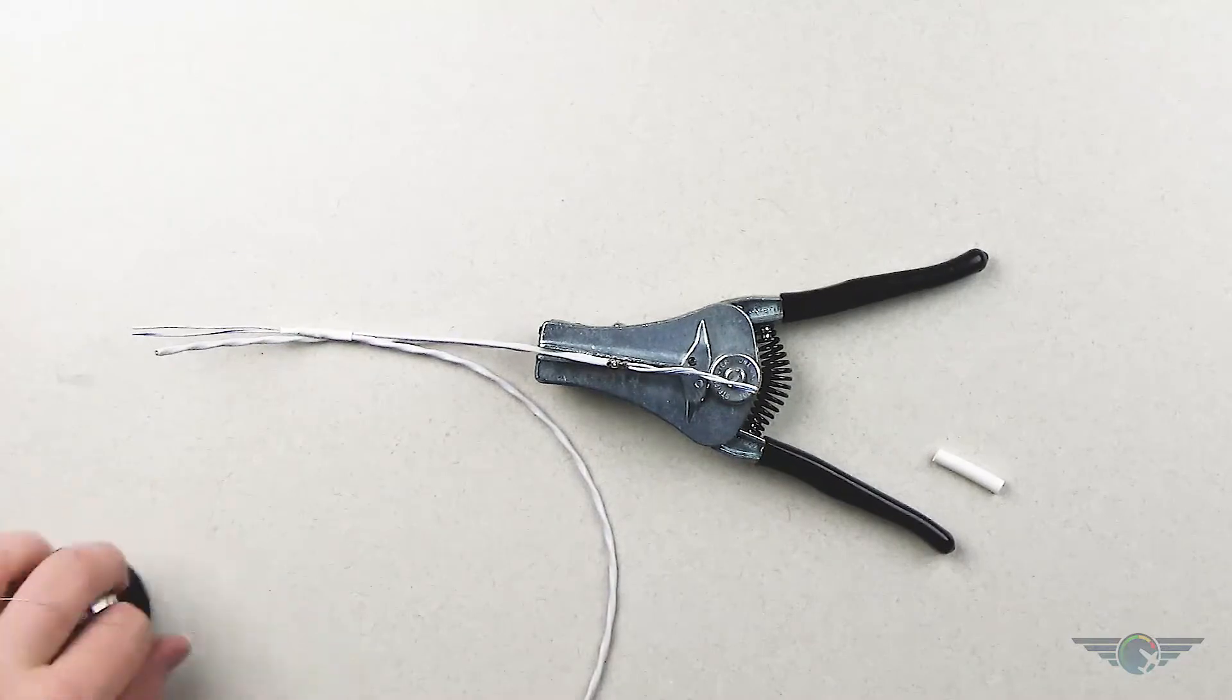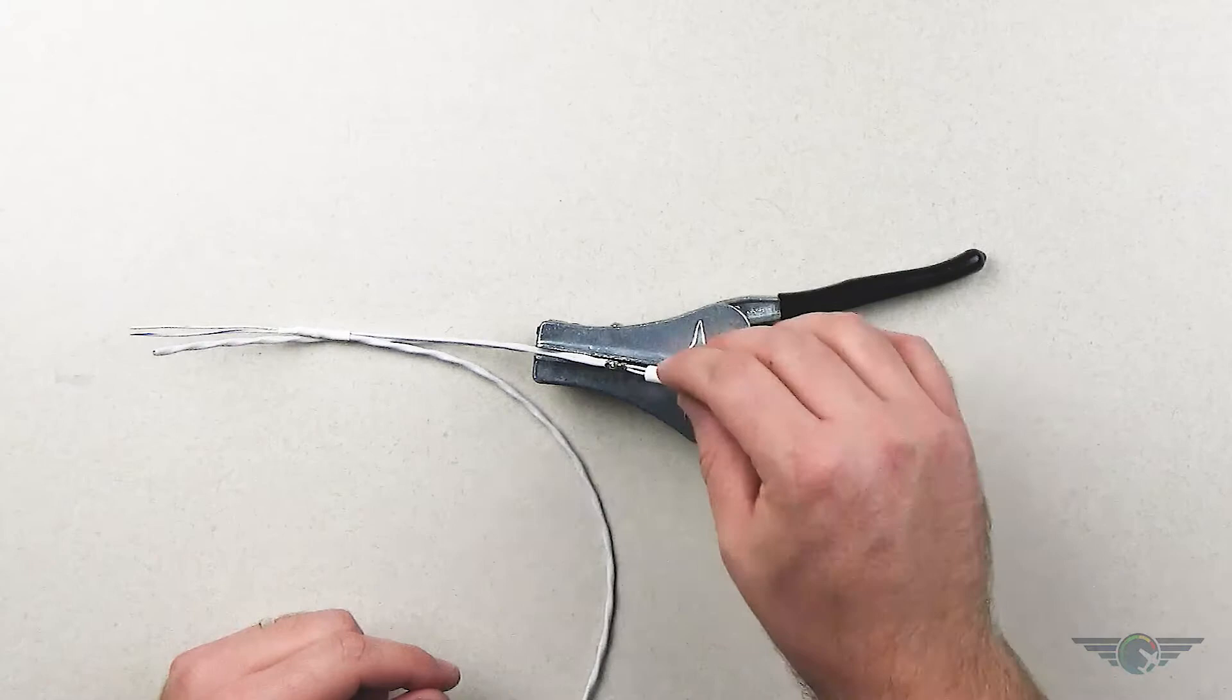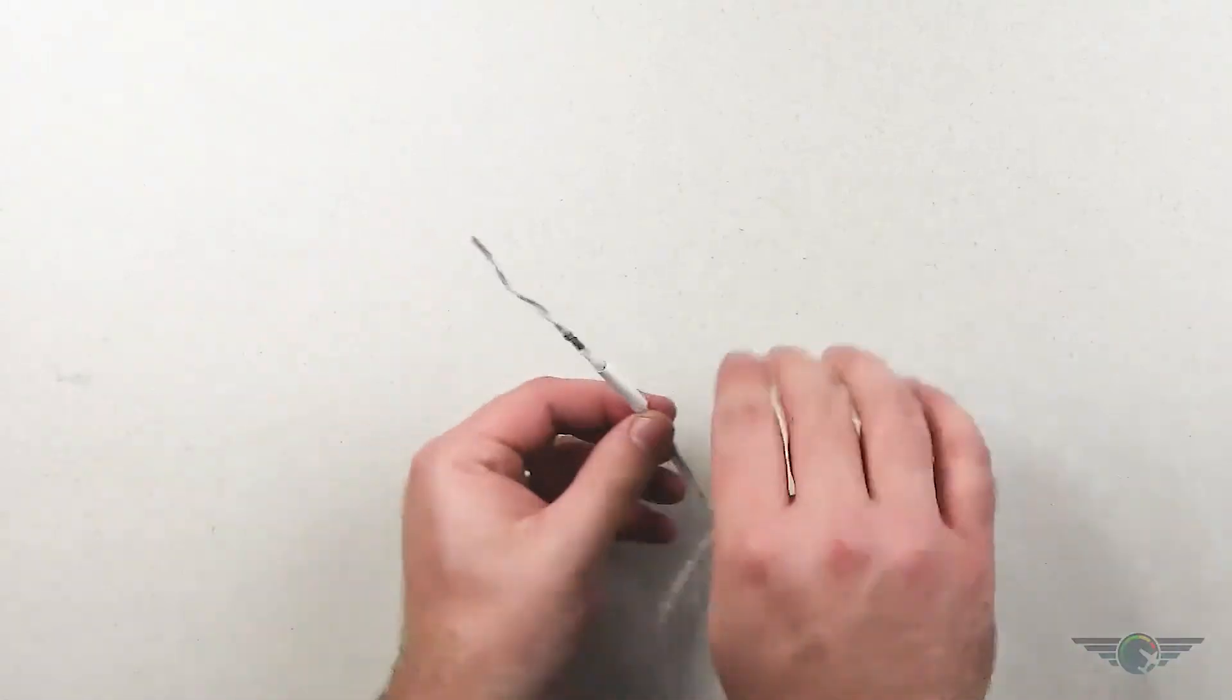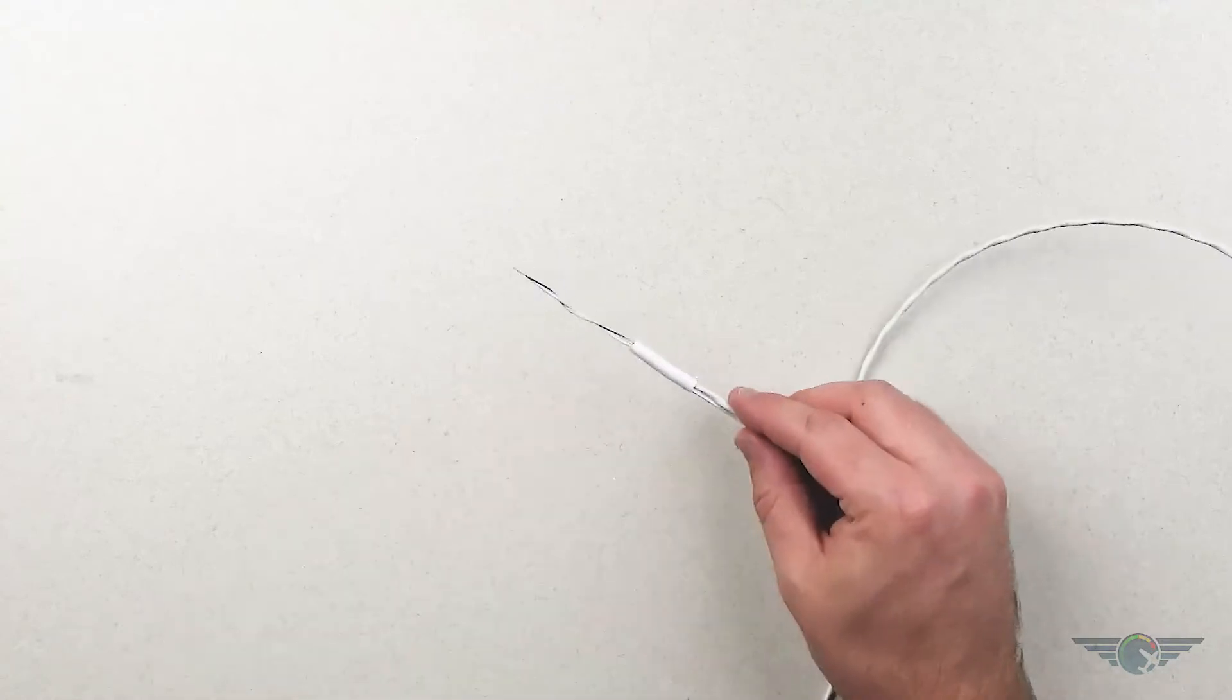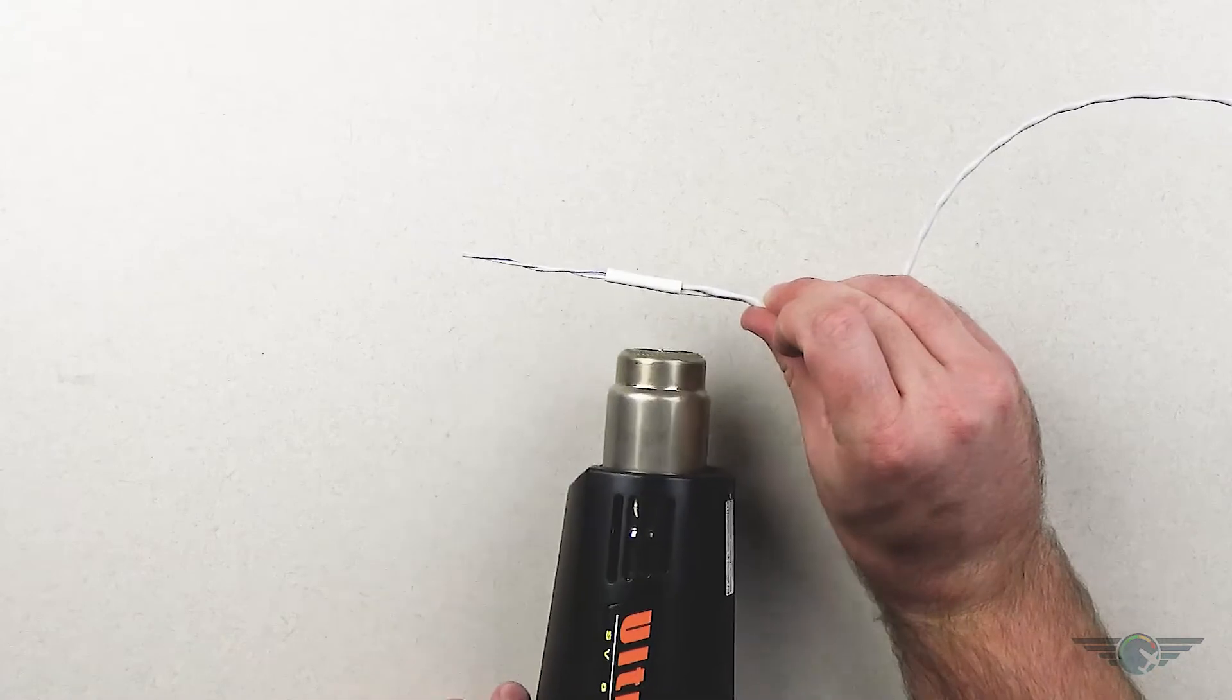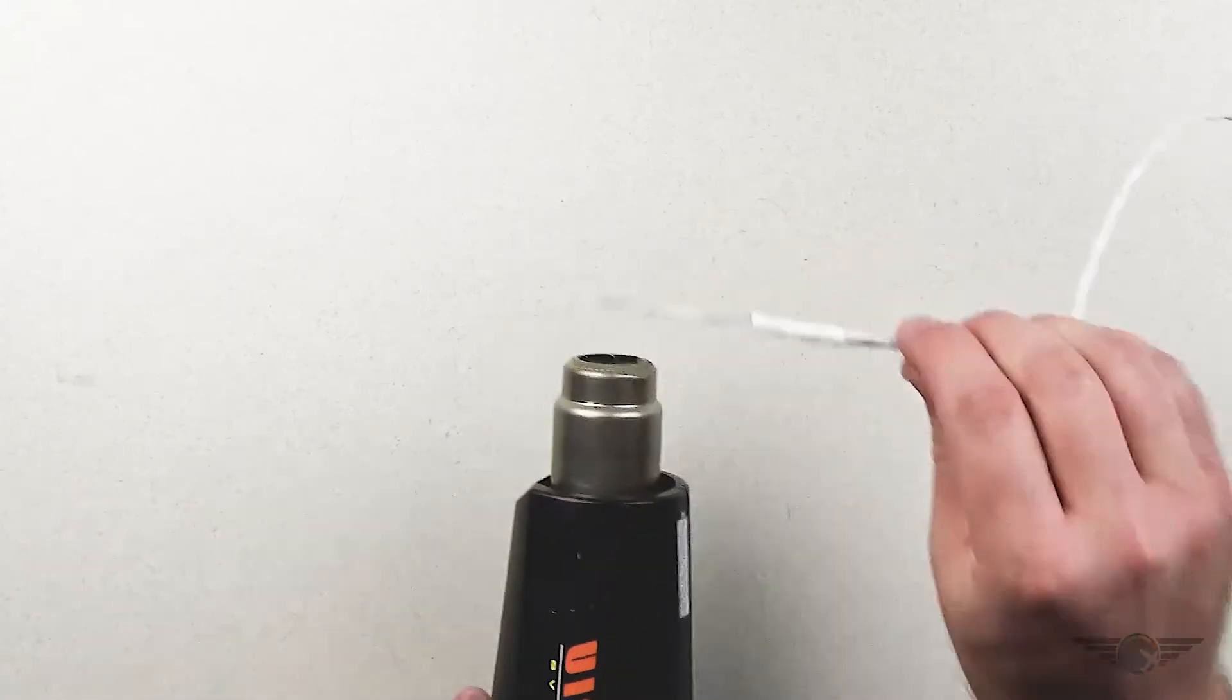So now we have a good mechanical connection. And then we're going to take our piece of heat shrink tubing and do the same kind of process. So I'll cover up my shield drain there and then use my heat gun to get that tubing.